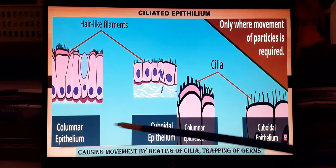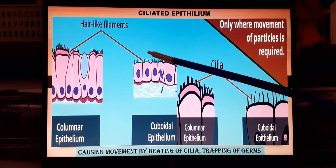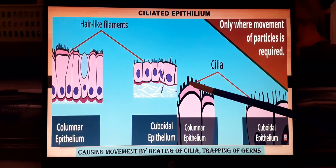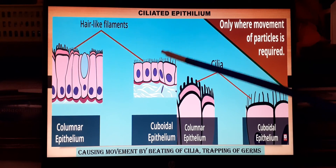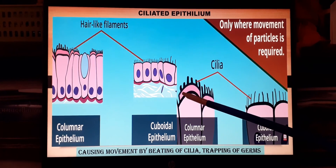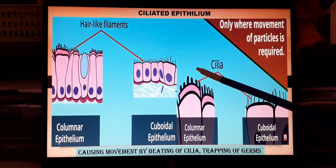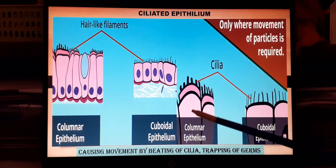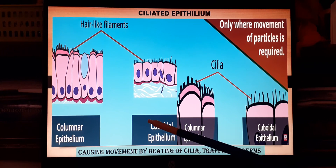The next type is ciliated epithelium, where the cells may be columnar or cuboidal but have developed hair-like filaments called cilia. These cilia beat and transfer material from one side to the other — as in the trachea, bronchi, ureters, oviduct of the female reproductive system, and the food pipe. They also help trap germs to protect that region.